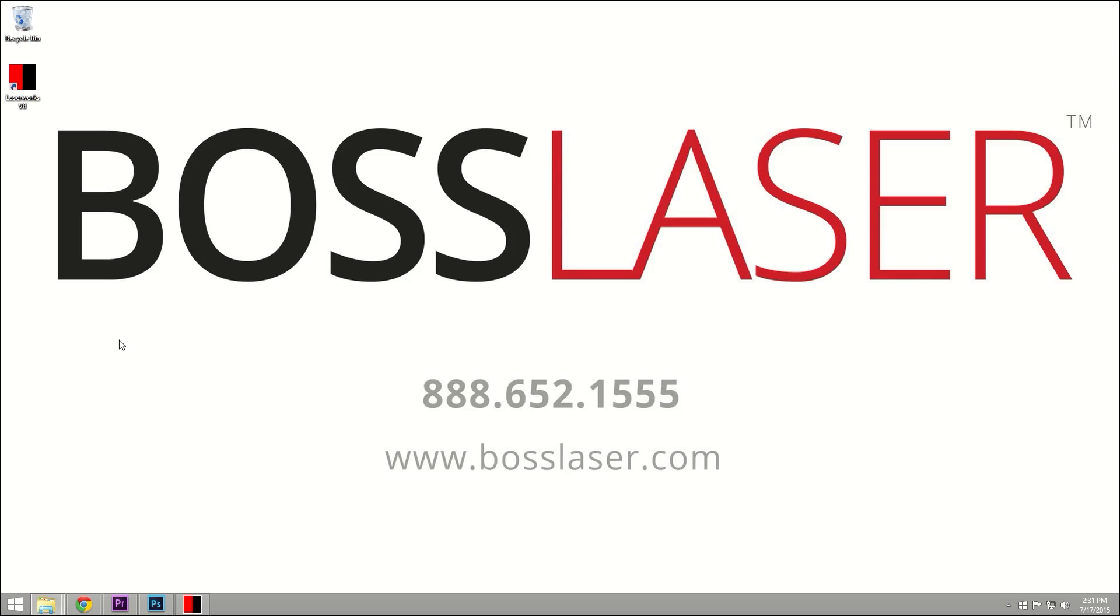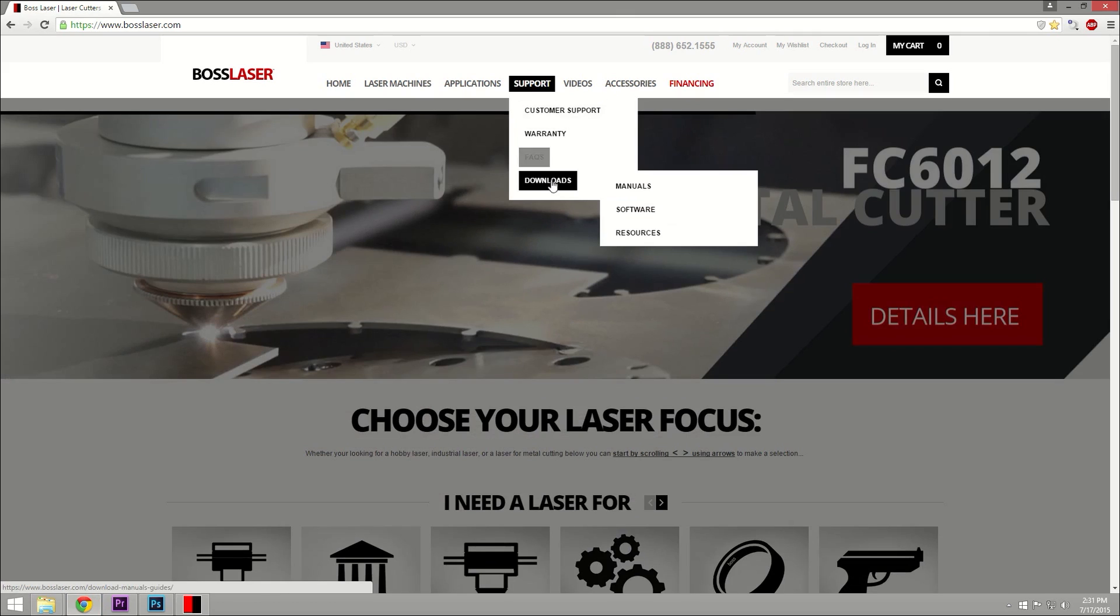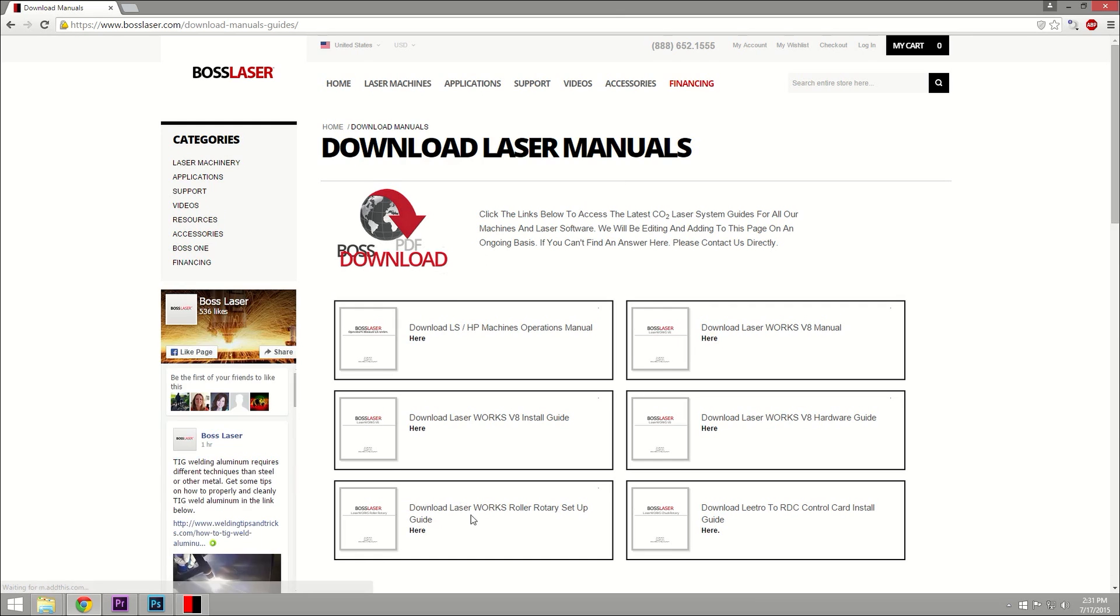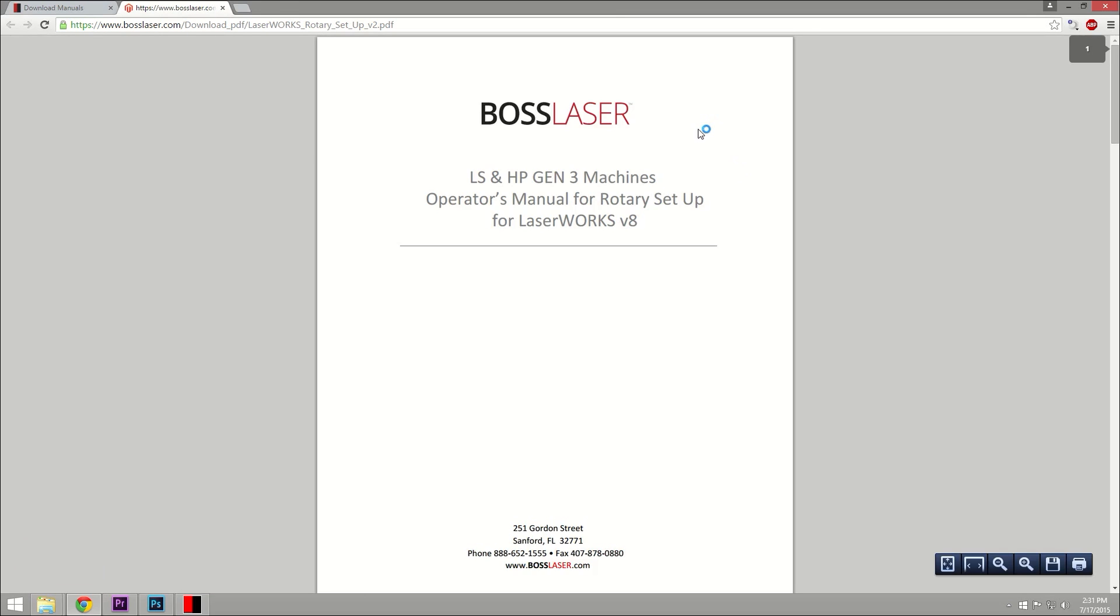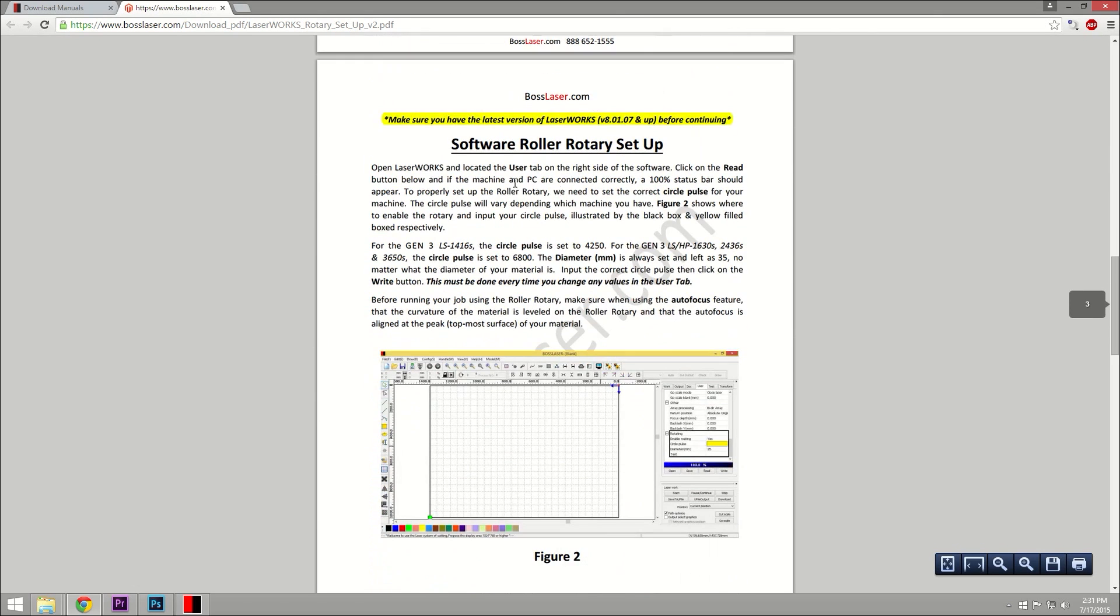In this video we are going to set up a roller rotary. First, let's go to the Boss Laser website. At the top of the page under the Support tab, highlight Downloads and click Manuals. Look for the Roller Rotary Setup Guide and click it. This short guide will quickly walk you through the steps necessary to set up your roller rotary.